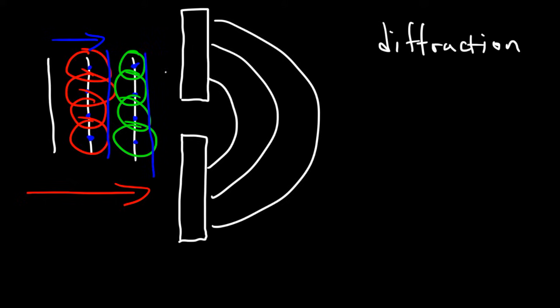And so once the plane wave gets to here, the points on this wave also emit spherical waves. Let me just use one point, keep it simple. So this point here will emit its own spherical wave.